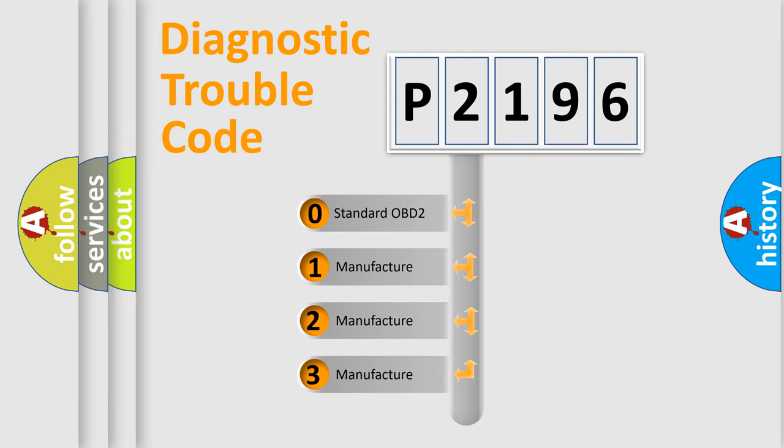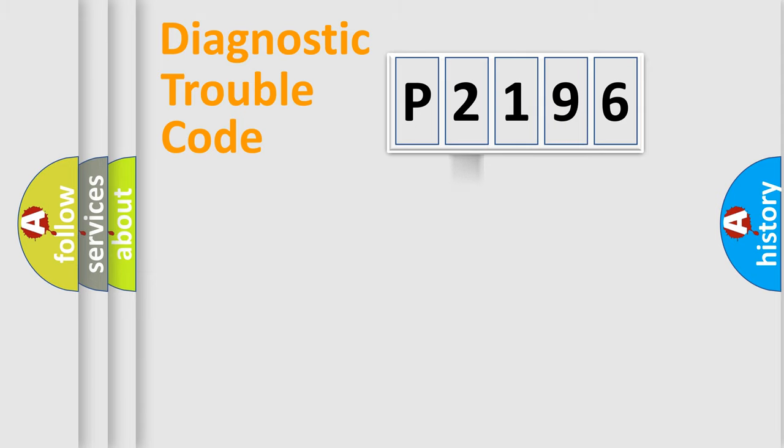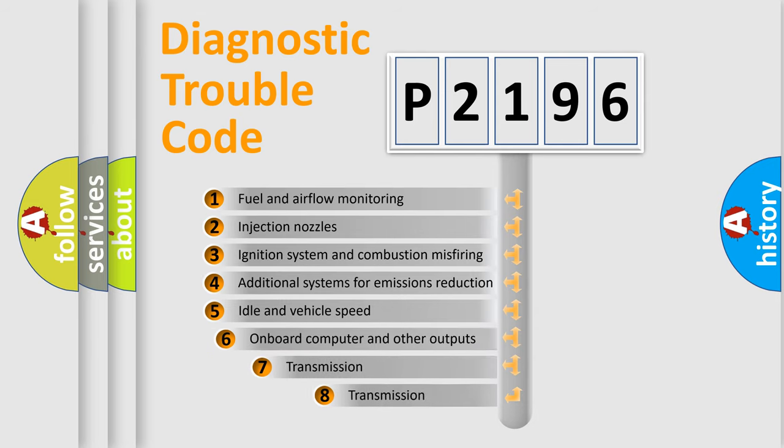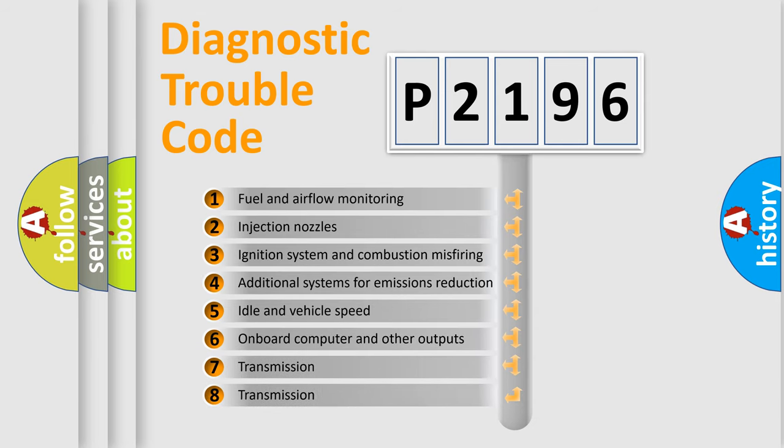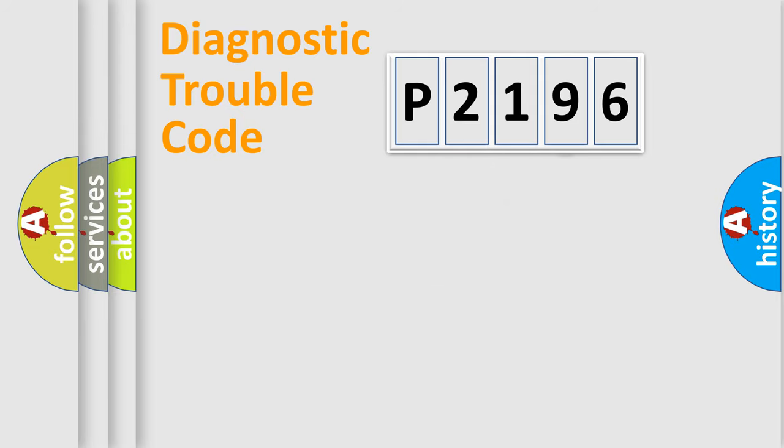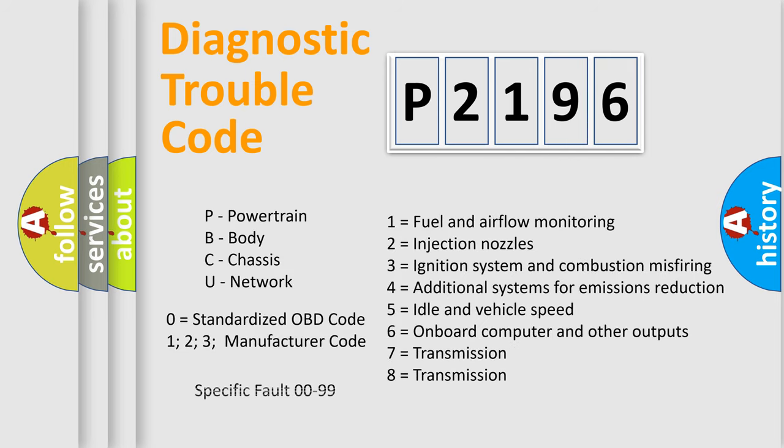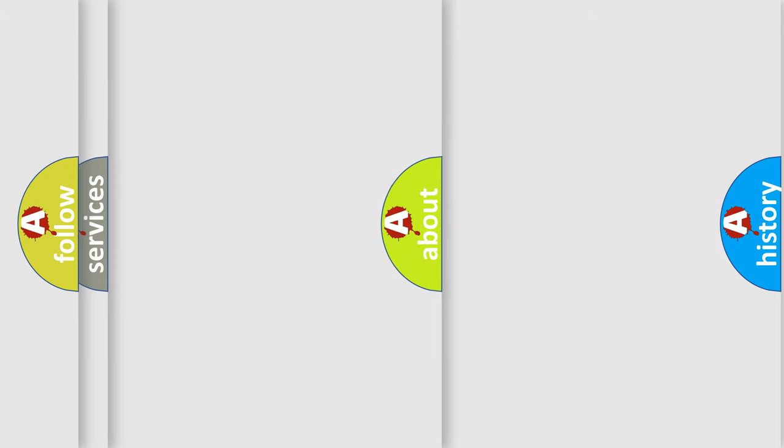If the second character is expressed as zero, it is a standardized error. In the case of numbers 1, 2, 3, it is a manufacturer-specific error. The third character specifies a subset of errors. The distribution shown is valid only for the standardized DTC code. Only the last two characters define the specific fault of the group. Let's not forget that such a division is valid only if the other character code is expressed by the number zero.